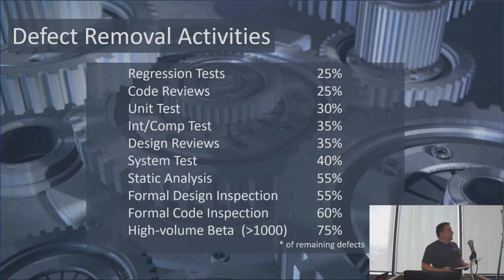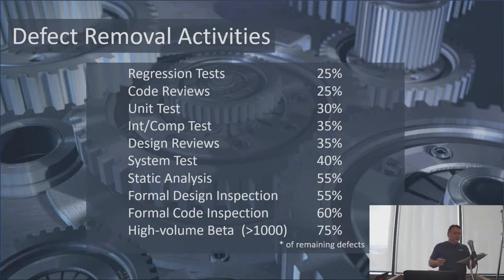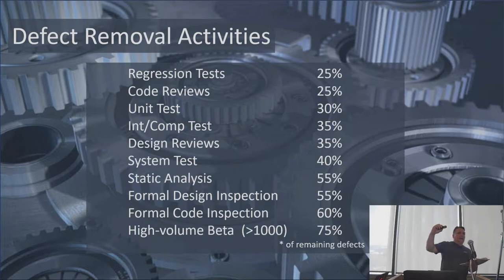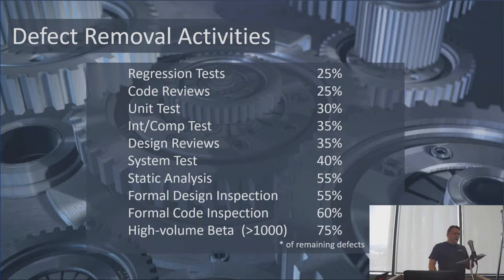These are all median values from Steve McConnell's research and a couple other sources. Note that these percentages are composite, not overall — you can't just add them up. At each stage, they represent the percentage of defects still in the code after the last activity was applied, not the percentage of all overall defects.